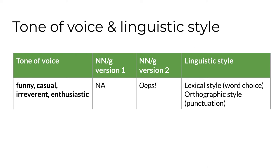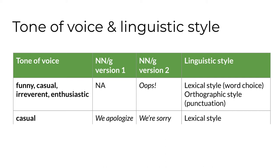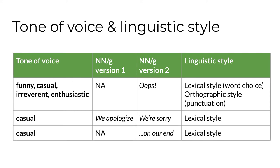To make version two of the message funny, casual, irreverent, and enthusiastic, the word 'oops' and an exclamation point were added at the beginning. The instructional materials in module two taught you that words are called lexemes or morphemes in linguistics, so we could describe the difference between the two messages as one of lexical style. The change in punctuation is orthographic — it's how language is coded in writing. There are two other differences that create the more casual tone of voice: 'we're sorry' is more casual lexical style than 'we apologize,' and the addition of 'on our end' is also a more casual lexical style. So several lexical style choices make version two more casual, funny, irreverent, and enthusiastic than the tone in version one.